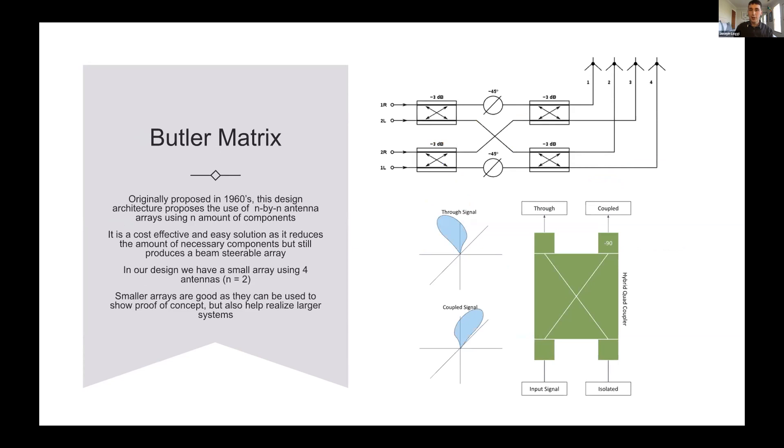Probably the main star of the show is we're using a Butler matrix architecture. It's an older architecture first proposed in the 1960s. The design of the architecture uses an n by n antenna array with a limited amount of components. These components mainly involve input delays and quadrature hybrid couplers. The quadrature hybrid coupler is probably one of the most important aspects of the design. In the quadrature coupler, there's two input ports and two output ports. With these two output ports, the input port goes through and the through port transmits the signal as is. The other port will give it a directivity or a phase shift. Here we're seeing a negative phase shift of 90 degrees.